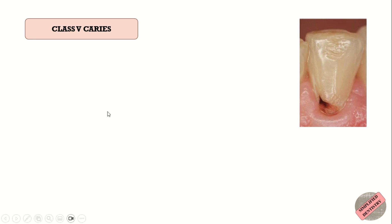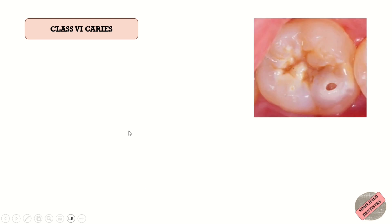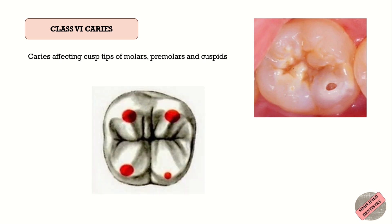Class 5 caries affects the gingival one-third of the facial or lingual surfaces of the anterior or posterior teeth, so it basically includes the gingival third area. Class 6 caries was never described by Black and was later added by Simon. It includes caries affecting the cusp tips of molars, premolars, and cuspids — so Class 6 caries involves the cusp tips.